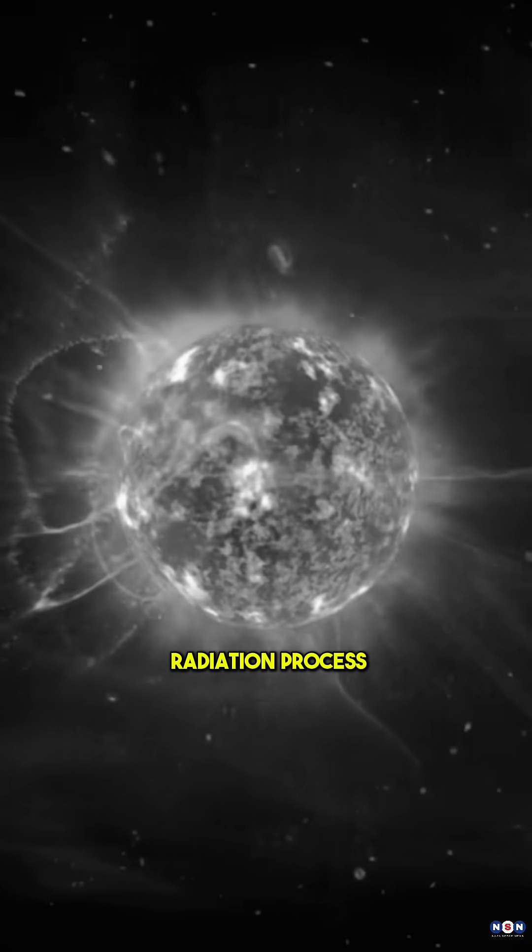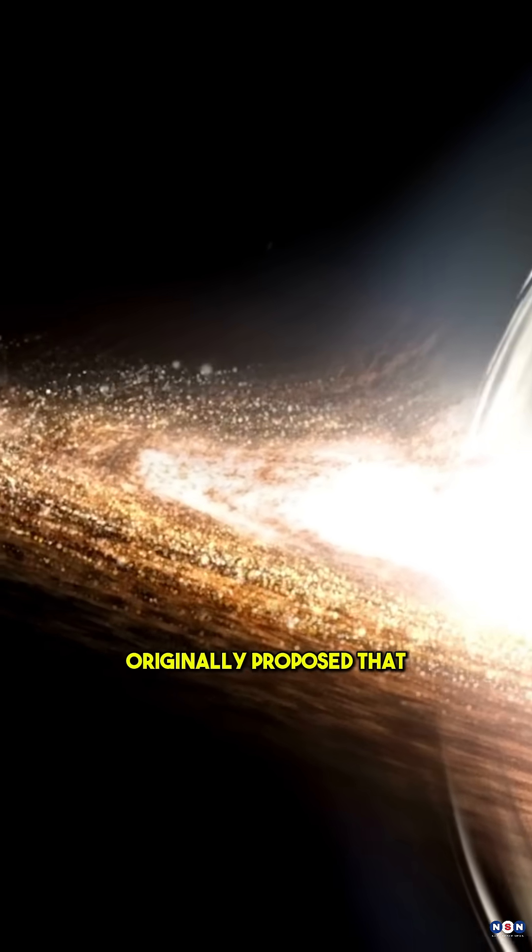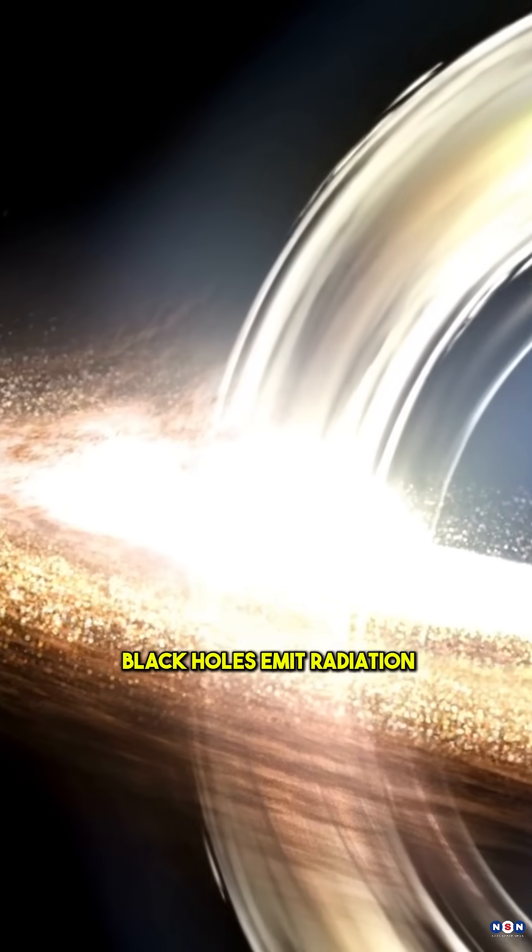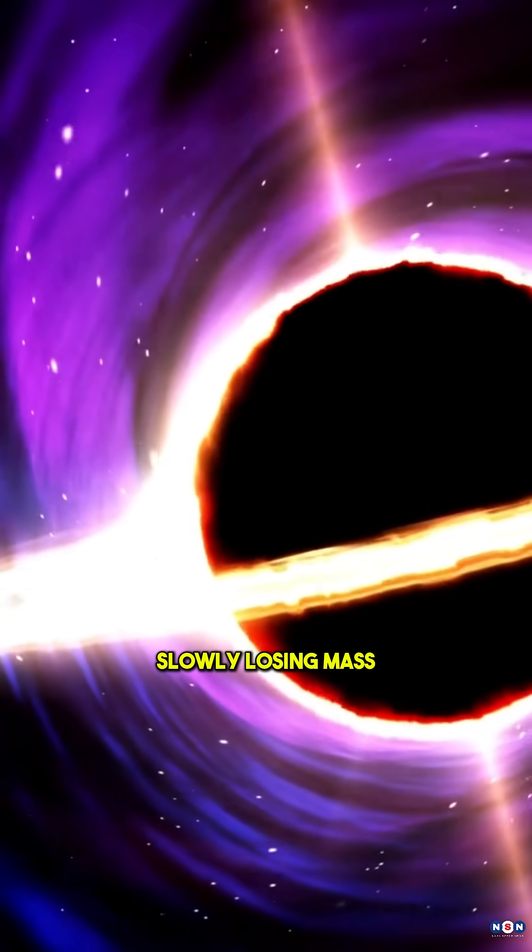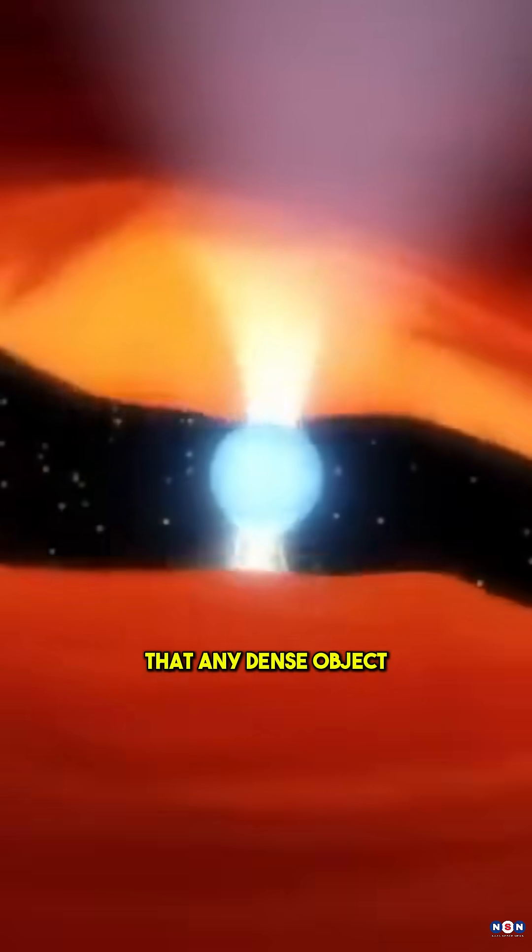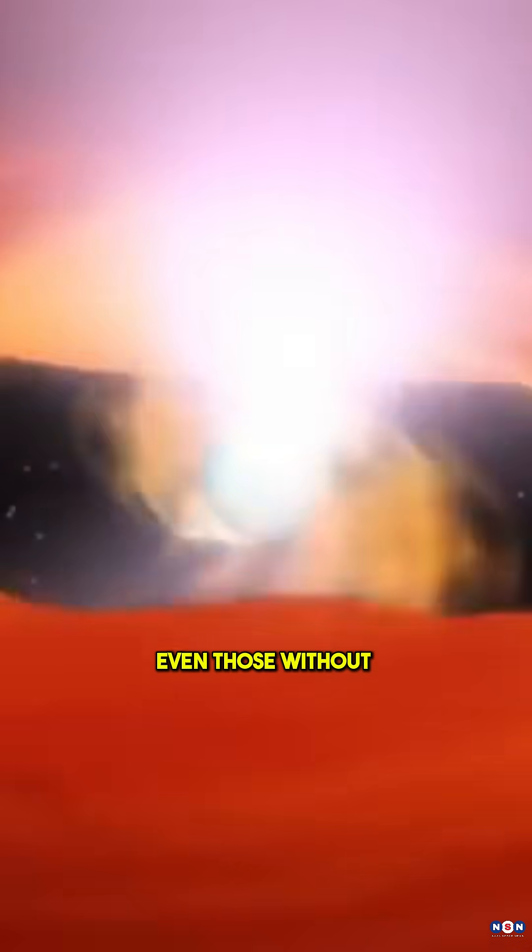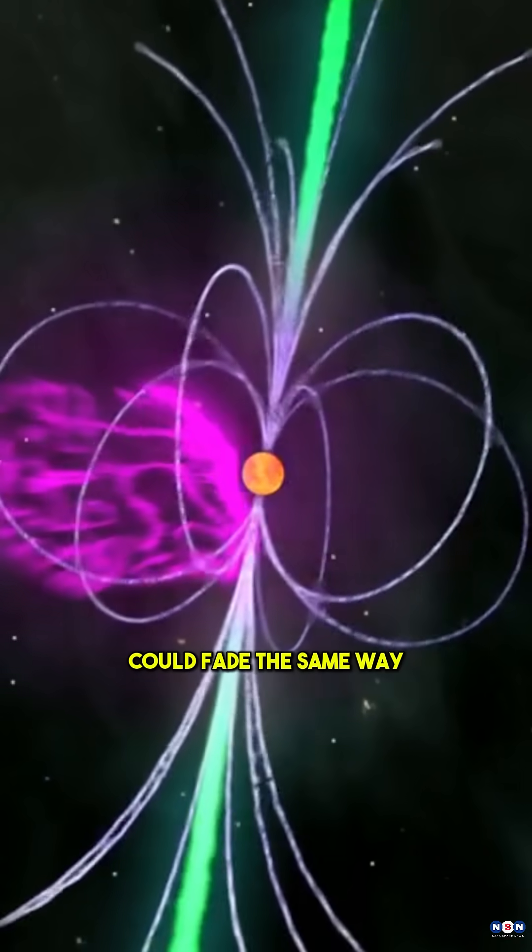How? Through a Hawking-like radiation process. Hawking originally proposed that black holes emit radiation due to quantum effects, slowly losing mass. But now, scientists believe that any dense object, even those without event horizons, could fade the same way.